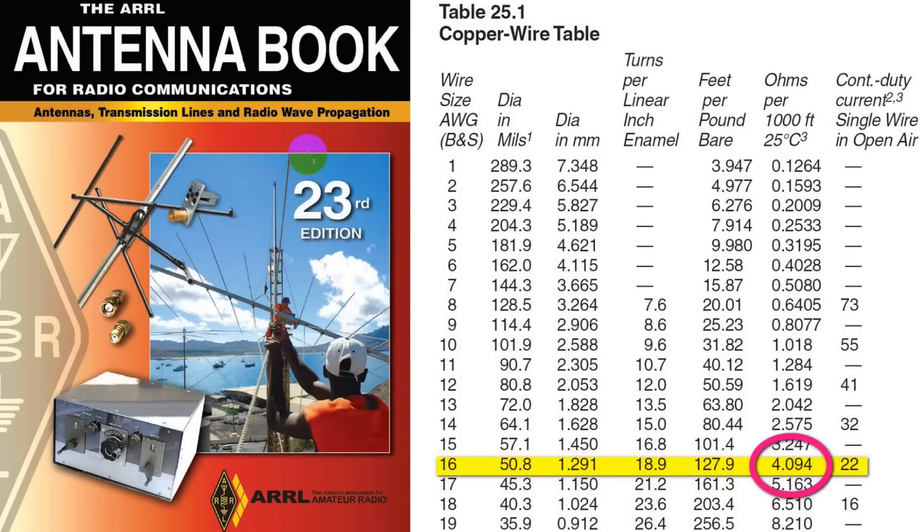Let's take a look in the antenna book here at the copper wire table, which is table 25.1. We're going to pick 16-gauge wire because that's really common in this type of antenna, and several forms of RG8 coax have 16-gauge center conductors. The ohms per 1,000 feet at 25 degrees centigrade is 4.094, or 4.1. For ease of calculation, we're just going to call it 4. So that's 0.4 Ω per 100 feet.